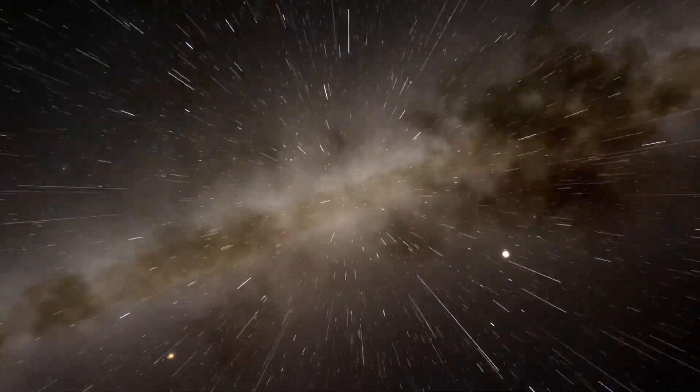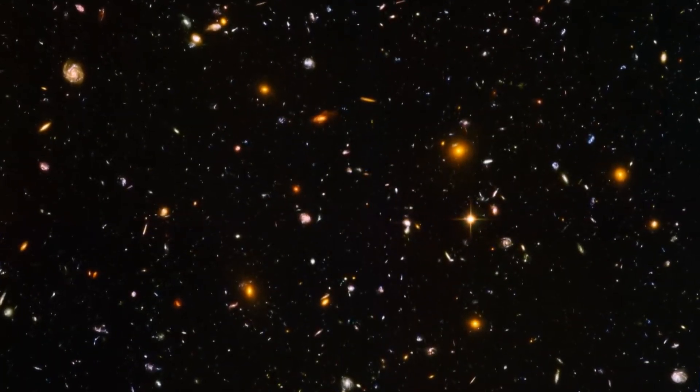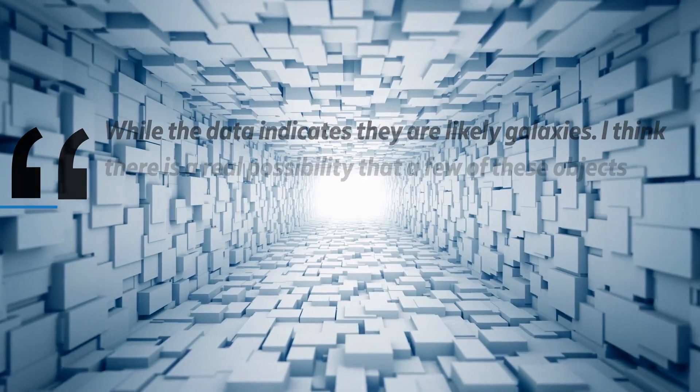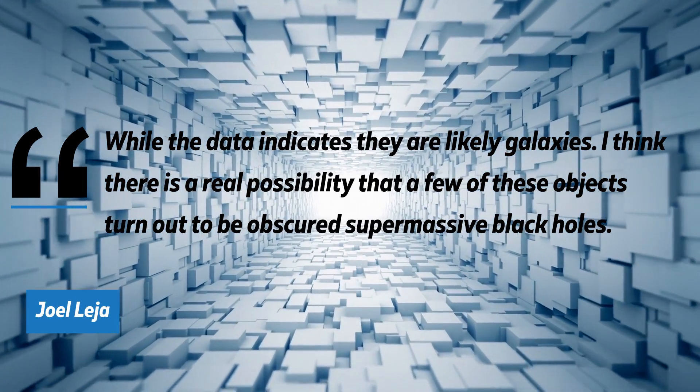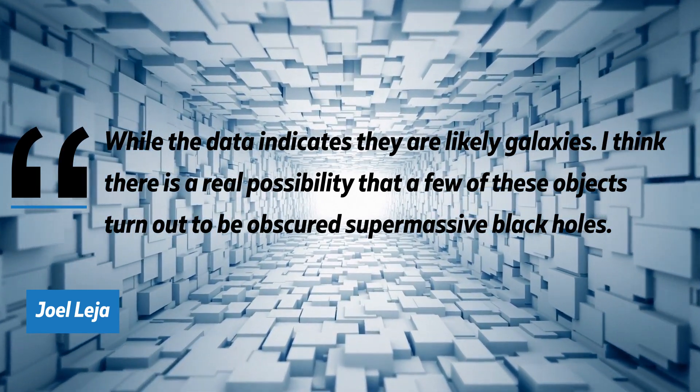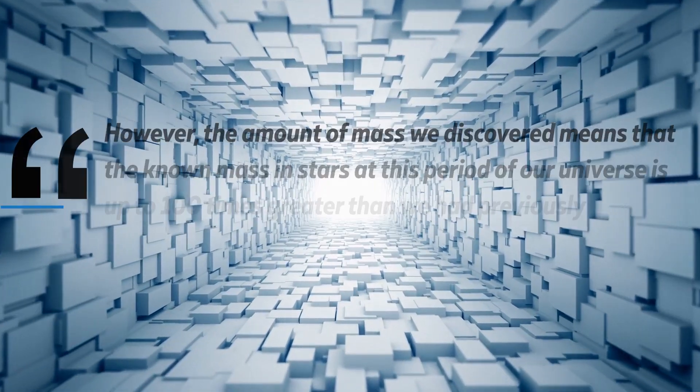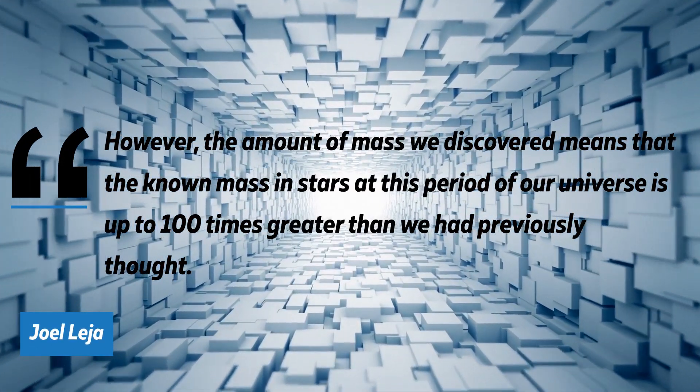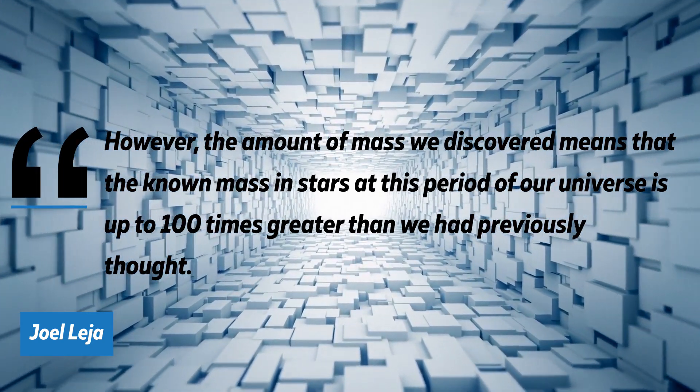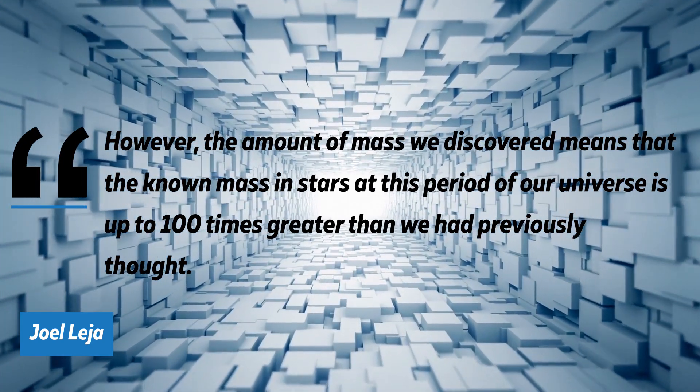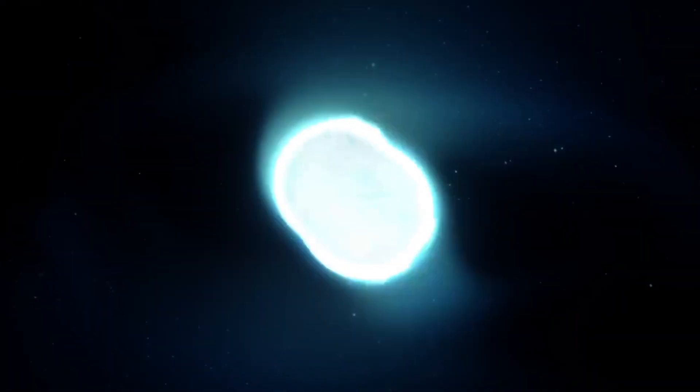While he revealed that they had no idea what we were going to find, the unexpected has since created issues in the field. The assistant professor also added that this was their first glimpse back this far in time, so researchers were keen to keep an open mind about what they were seeing before them. While the data indicates they are likely galaxies, he said, I think there is a real possibility that a few of these objects turn out to be obscured supermassive black holes. However, the amount of mass we discovered means that the known mass in stars at this period of our universe is up to 100 times greater than we had previously thought.